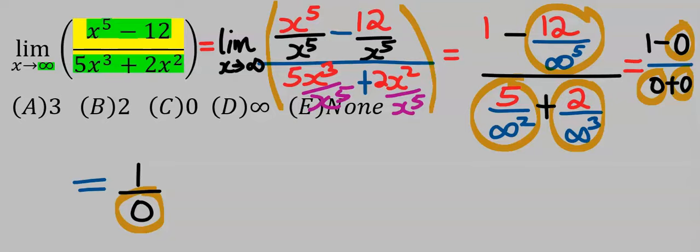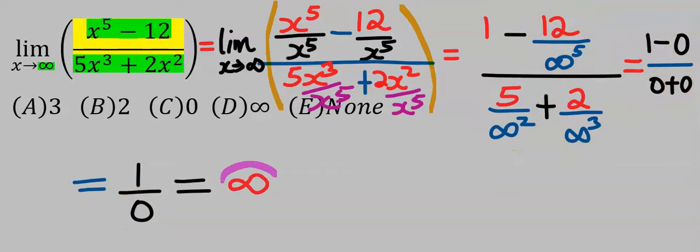And finally, anything that divides by zero is infinity. Hence, our final answer is infinity, which is D.